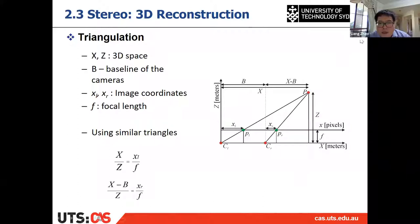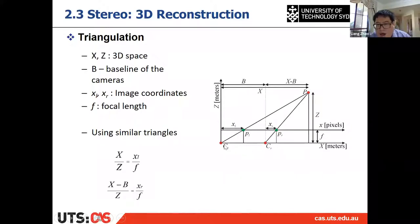Considering the projection figure on the right: capital P is the 3D point, PL is the point on the left image, and PR is the point on the right image. CL and CR are the centers of each camera on the stereo camera. This line is the image plane, here is the camera center, so this distance is the focal length — the distance from the camera center to the image.